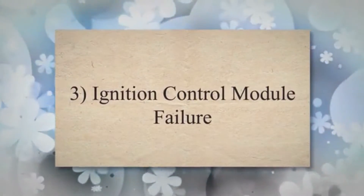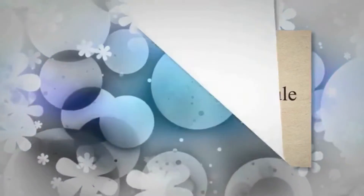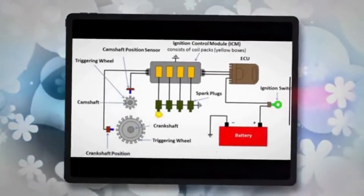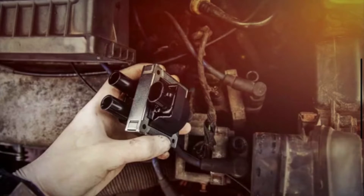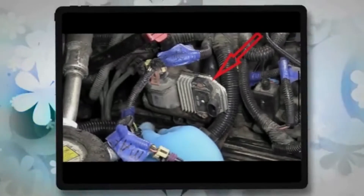3. Ignition control module failure. The ignition control module controls the timing and strength of the sparks. If it becomes faulty, misfires can occur.